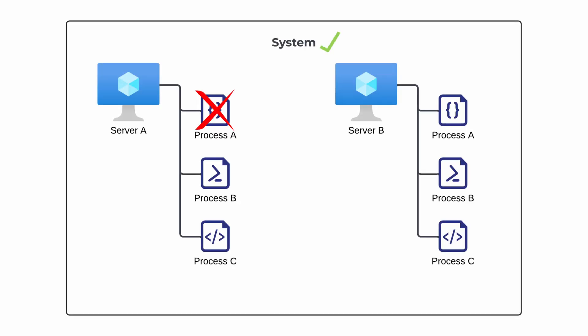After running your experiment, you hopefully have a bunch of data to analyze. Perhaps you find that while process A functioned as intended on server B, process B struggled under the increased load on server B, making the system as a whole not function as intended. So now you have identified a potential failure point, and you can focus on mitigating that. Chaos engineering is not a short-term thing — it should be an ever-ongoing practice. You repeat the cycle again and again because you'll never run out of potential failure points.